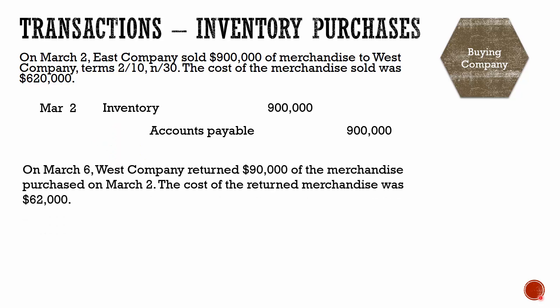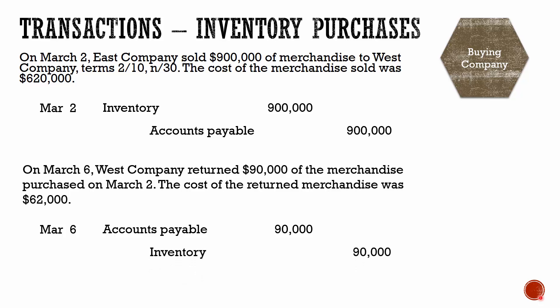Next, on March 6th, West Company returned $90,000 of the merchandise that they purchased on the 2nd. When you're returning merchandise, maybe it was defective, maybe they accidentally ordered the wrong amount — it doesn't really matter. The accounting is the same whether it's a purchase return or a purchase allowance. We're going to decrease accounts payable by the $90,000, because we're not going to pay for something we returned, and then we decrease our inventory account because we no longer hold that $90,000 worth of inventory.